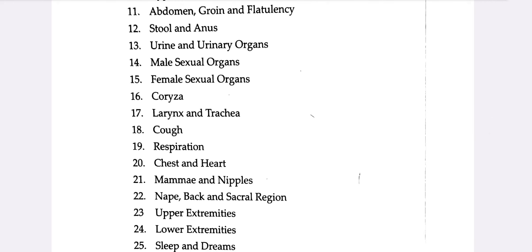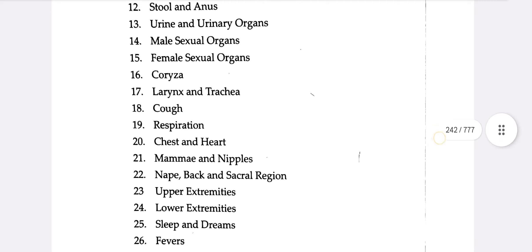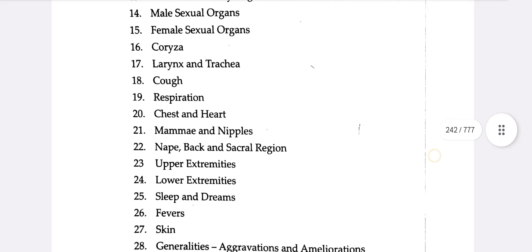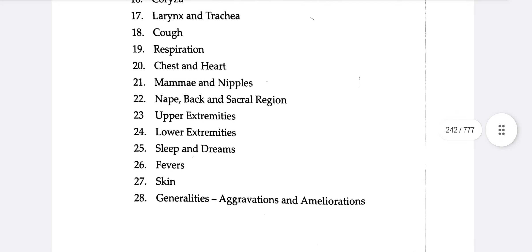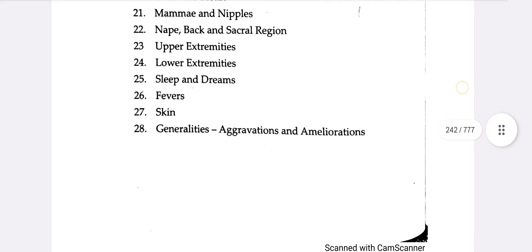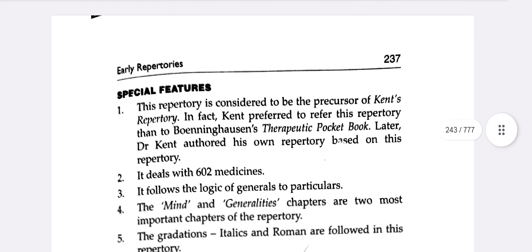The remaining chapters cover: Larynx and Trachea; Cough; Respiration; Chest and Heart; Mamma and Nipples; Neck; Back; Sacral Region; Upper Extremities; Lower Extremities; Sleep and Dreams; Fever; Skin; and Generalities — Aggravation and Amelioration.